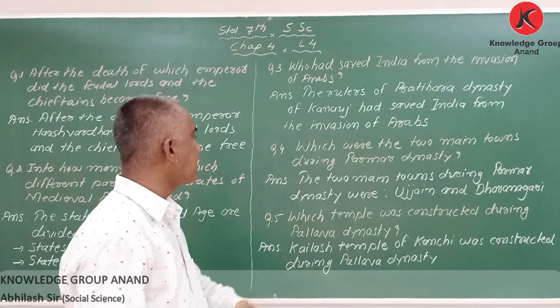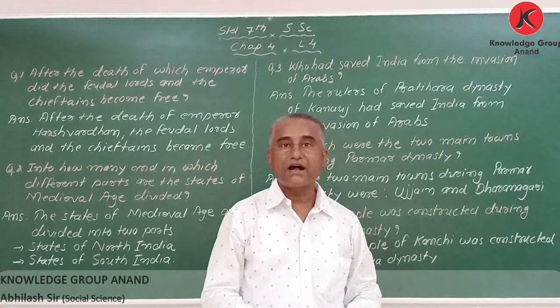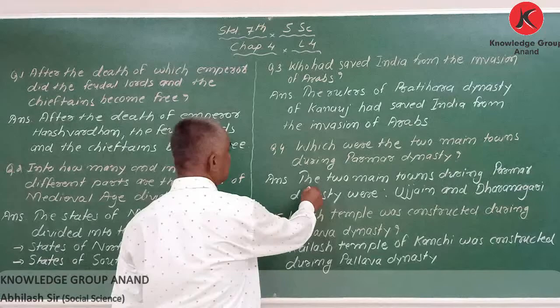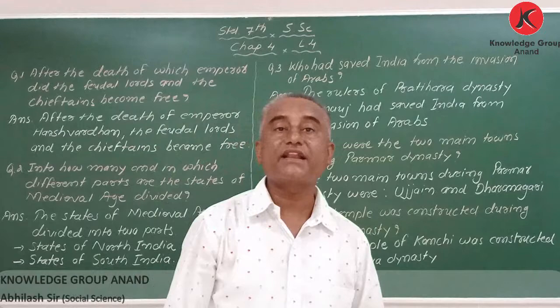Next question: which were the two main towns during the Parmar dynasty? I have already said that Ujjain and Dharanagari were the two main centers. The two main towns during the Parmar dynasty were Ujjain and Dharanagari.